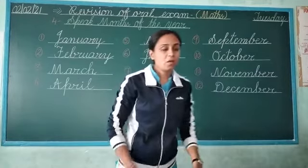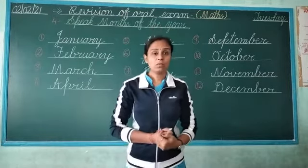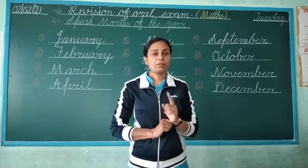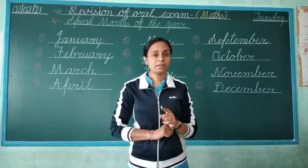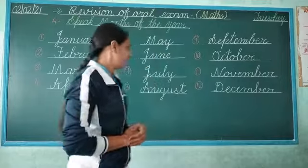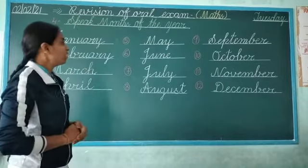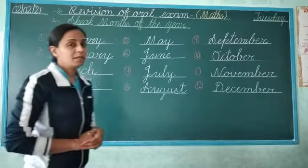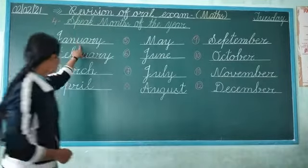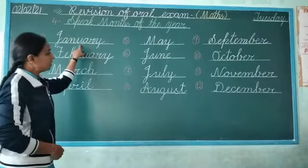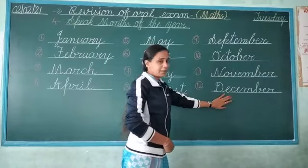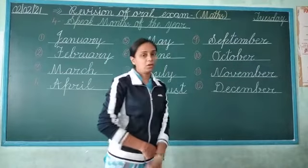Children, which month is running now? February. February is the shortest month in a year. Which month is the first month? January. Which month is the last month of the year? December.